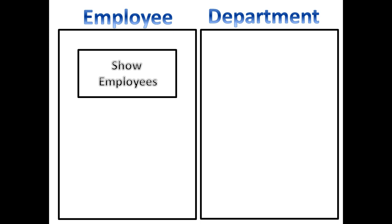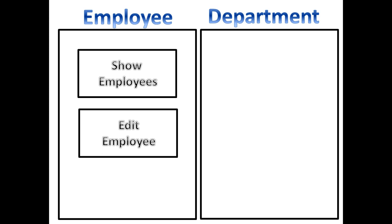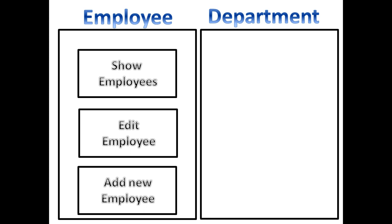One component for employee and one component for department. Inside employee we have a component which is responsible to show the employee details — we can consider that as another component. So inside the folder structure employee there is a subfolder called show employees. Our employee page also has the option to edit employee details, so we can have that as a separate component as well. And finally it has a functionality to add a new employee.